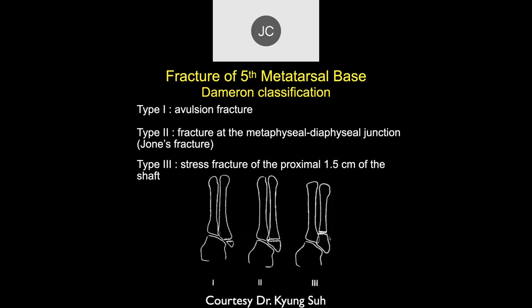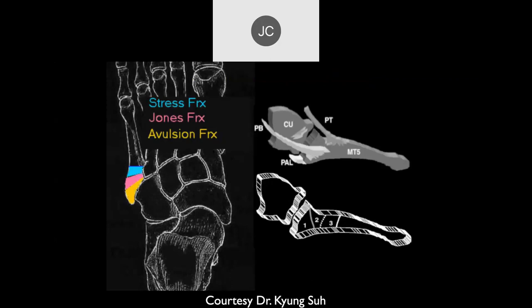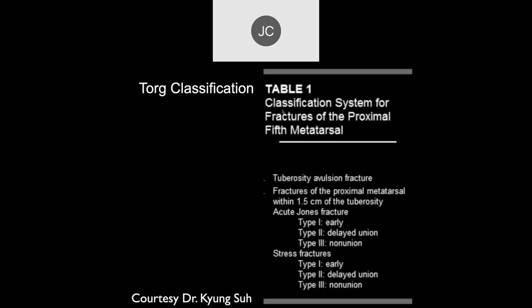Another classification system is the TORG classification, used by an orthopedic surgeon, which similarly includes avulsion fractures at the tuberosity and acute Jones fractures — with early, delayed, and nonunion phases. Then there's the stress fracture, also typed 1, 2, or 3, usually a little more distal, due to repetitive strain on the bone rather than acute traumatic injury. In clinical practice, it's not always easy to differentiate these types simply based on location.